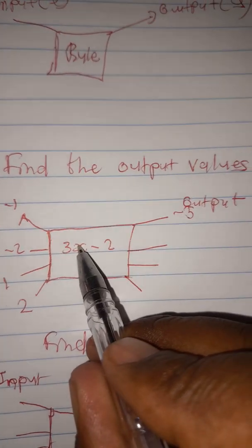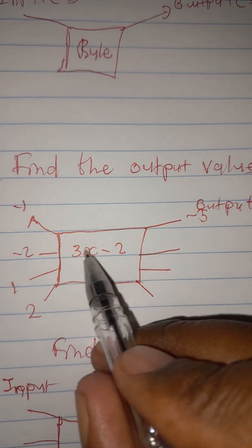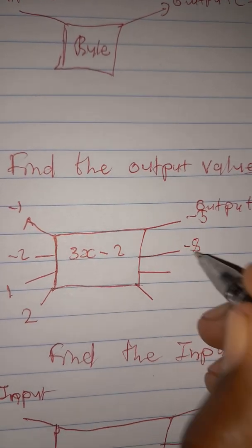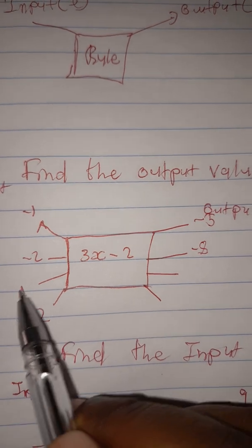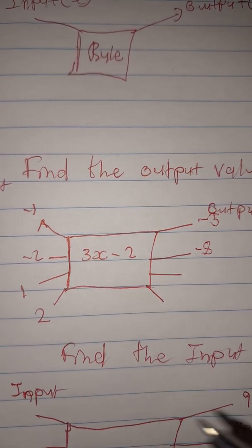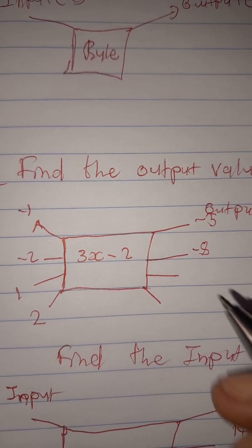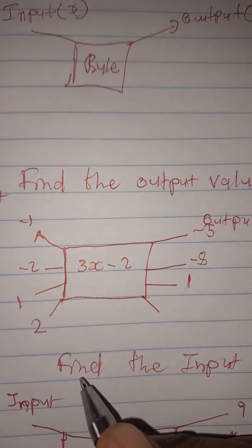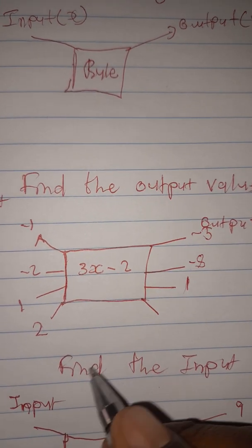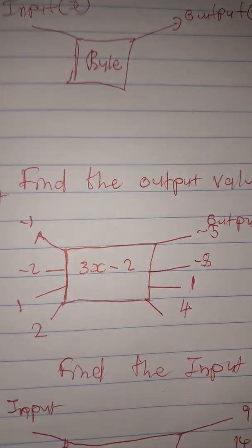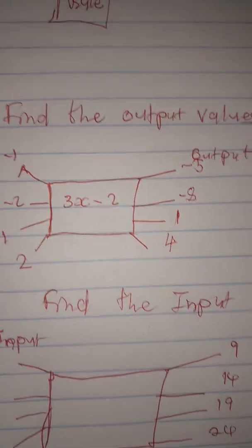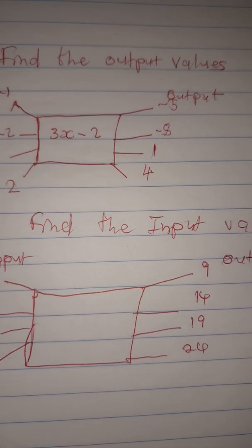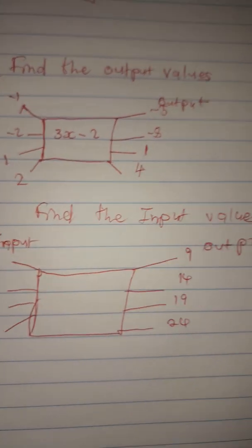For x = 1: three times one is three, and three minus two is one. For x = 2: three times two is six, and six minus two is four. So that's how you find the output values.